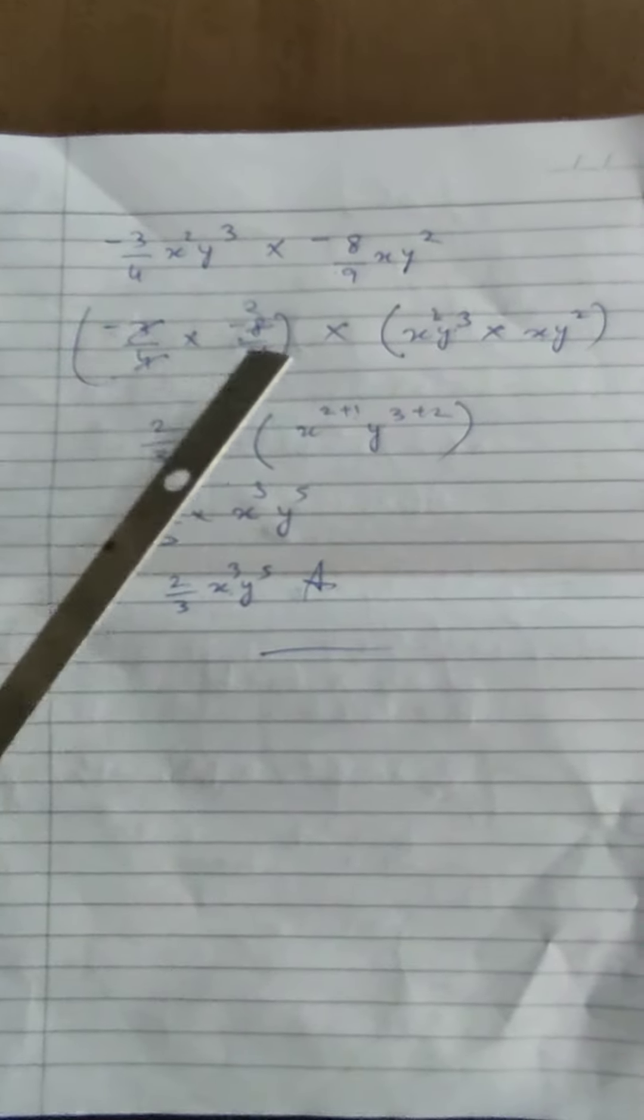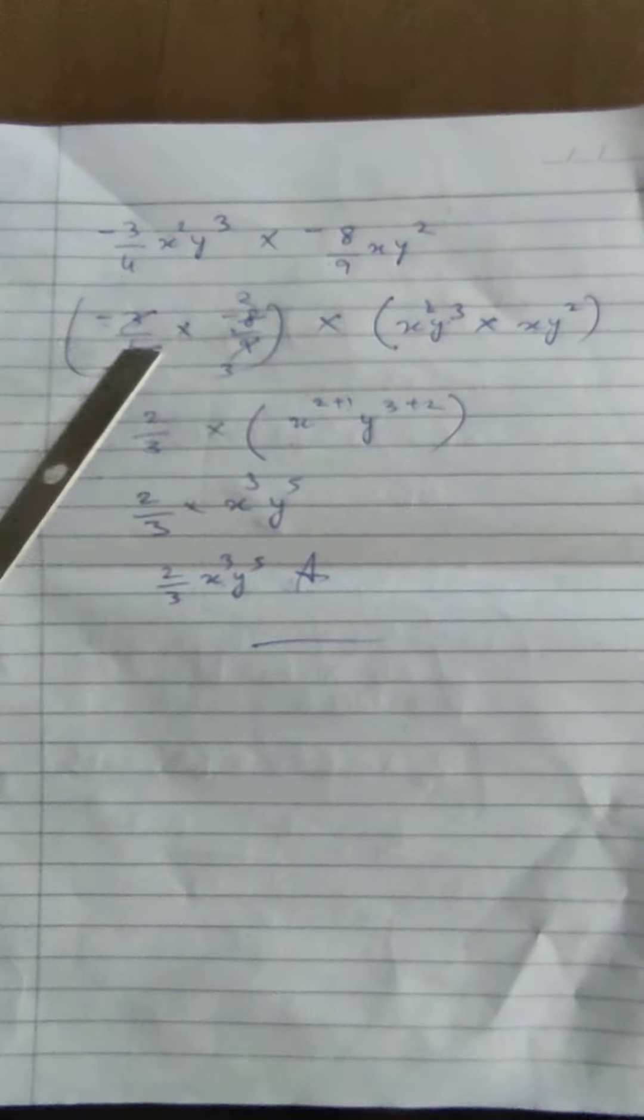Minus multiplied by minus gives us plus. So 3 will be cut with 9 and 4 will be cut with 8, giving us 2 over 3. Minus multiplied by minus gives us plus, so that's why we have not written the negative sign.